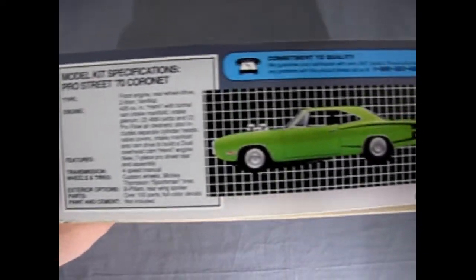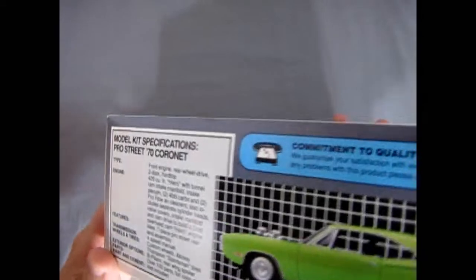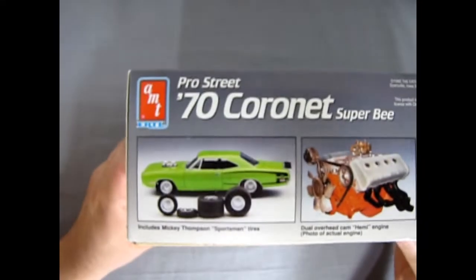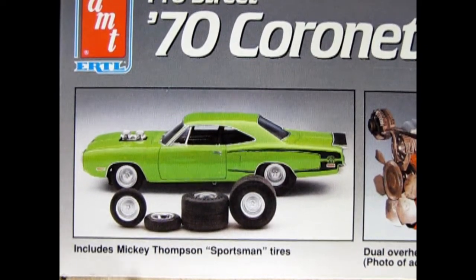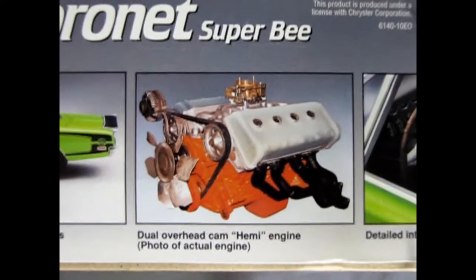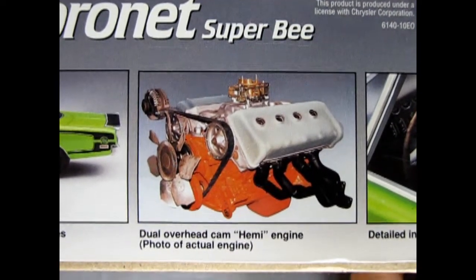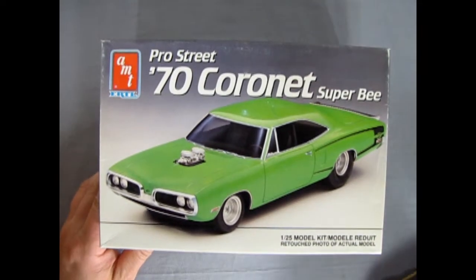So this car is really awesome looking. As you can see it's nice and sublime with a real slime green. And there's the end of the box but check out this. Can you dig it? Includes Mickey Thompson sportsman tires, big thick ones. Dual overhead cam Hemi engine, photo of actual engine, right on. And of course we have our detailed interior. All right, now let's pull the lid off this bad boy and see what's inside.